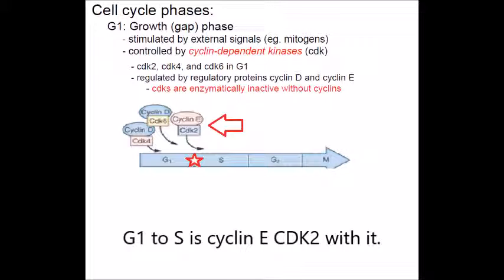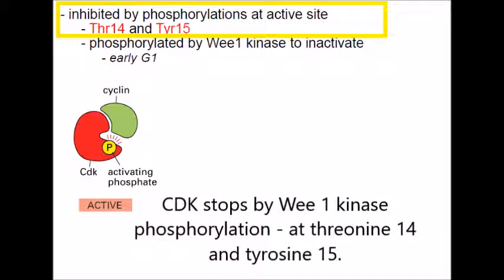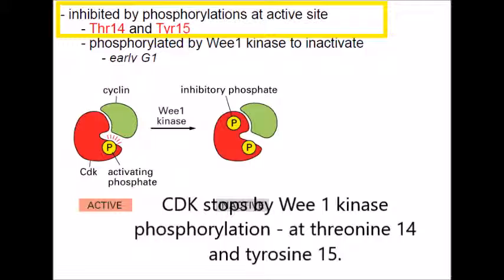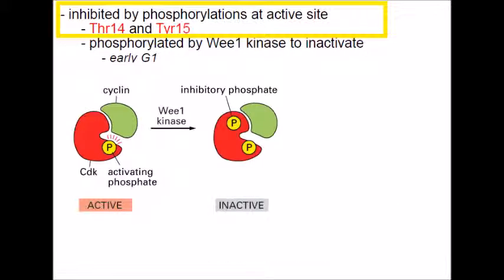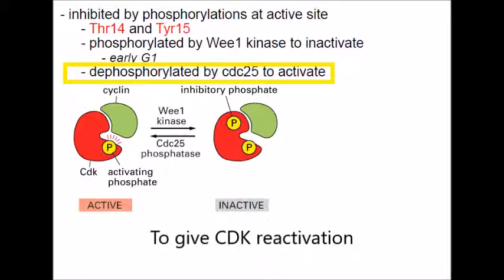G1 to S is cyclin E with CDK 2. CDK is stopped by Wee1 kinase phosphorylation at residues 14 and 15, but CDC25 phosphatase dephosphorylates those sites to give CDK reactivation.